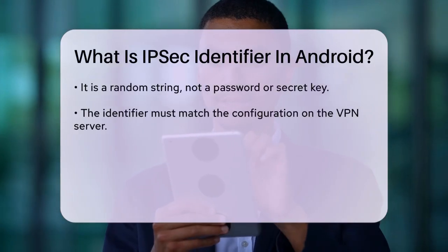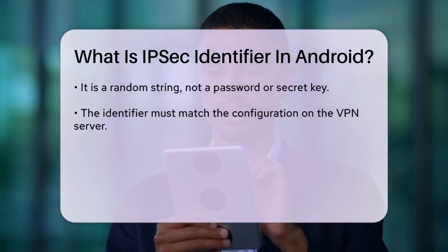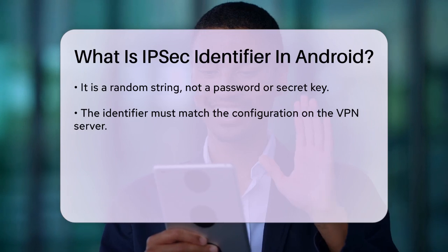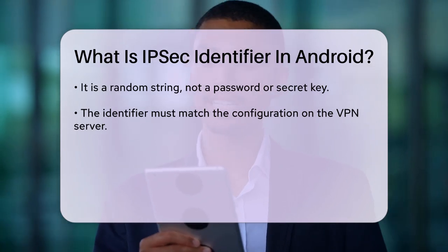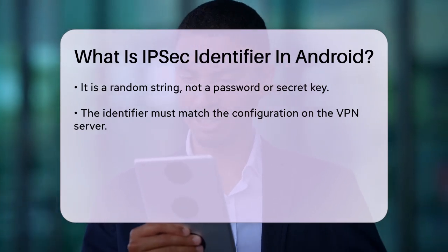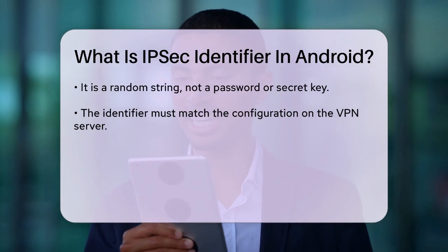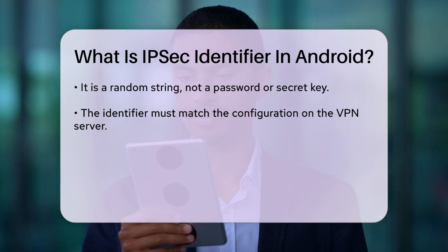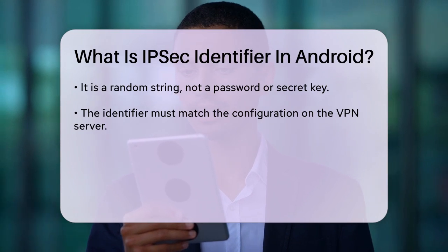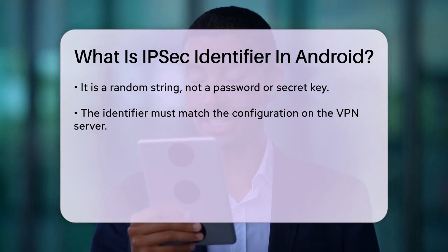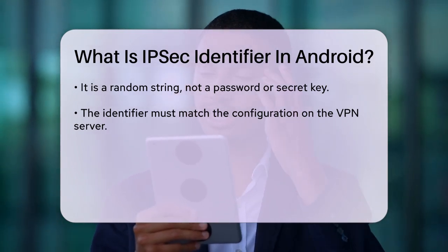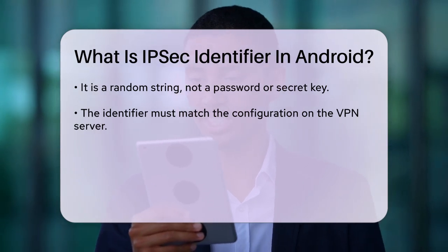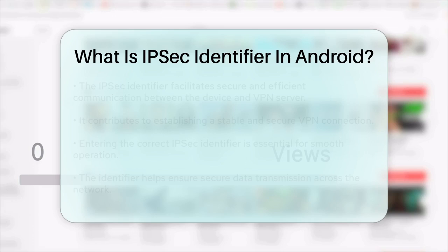For example, when you're configuring an IPSec IKEv2 VPN, you need to enter a random string as the IPSec Identifier. This string is not a password or a secret key, but rather a unique identifier that matches the configuration on the VPN server. The IPSec Identifier ensures that your device and the VPN server can communicate securely and efficiently. It's a part of the overall configuration that helps in establishing a stable and secure VPN connection.